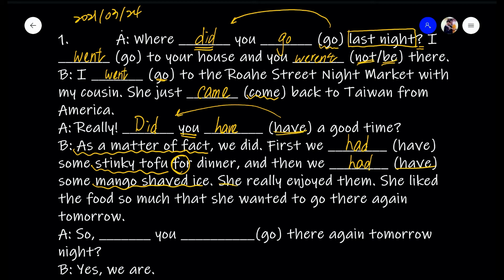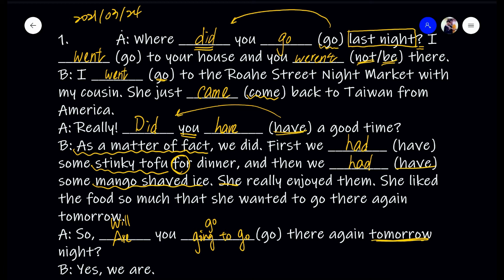This 'she' is the person's cousin. She liked the food so much that she wanted to come there again. So they say, 'Wow, so you [go] there again tomorrow?' Here — tomorrow — future tense. This will be either 'Will you go there again tomorrow?' Or, to be more certain, 'Are you going to go there again tomorrow?' Both are okay. But since person A got this piece of information from person B, it's okay to say 'Are you going to go there again tomorrow?'